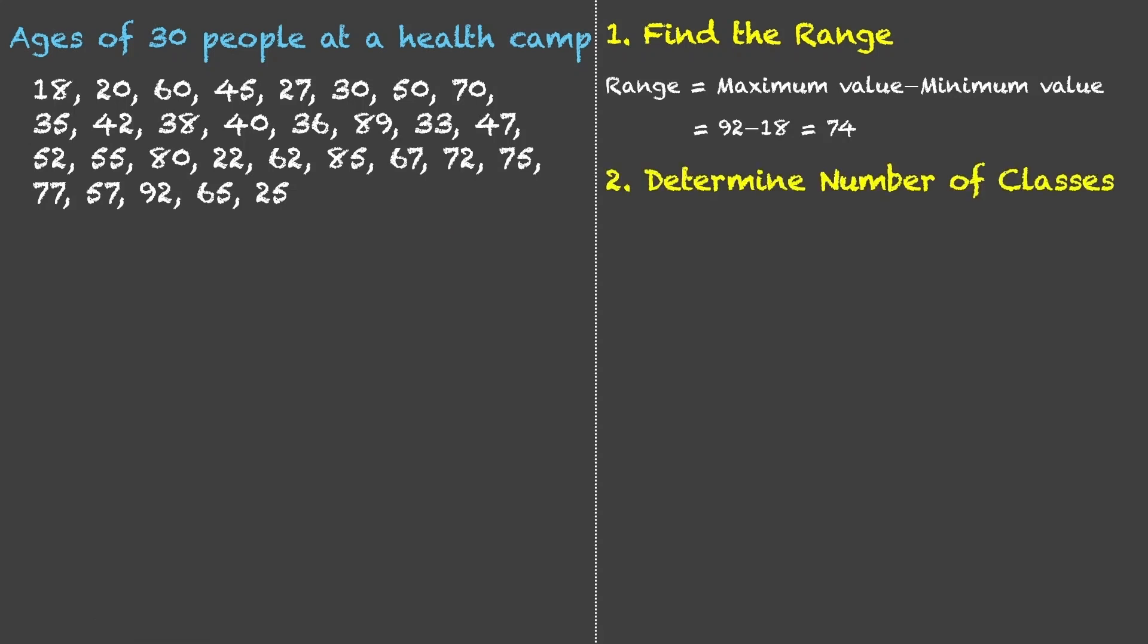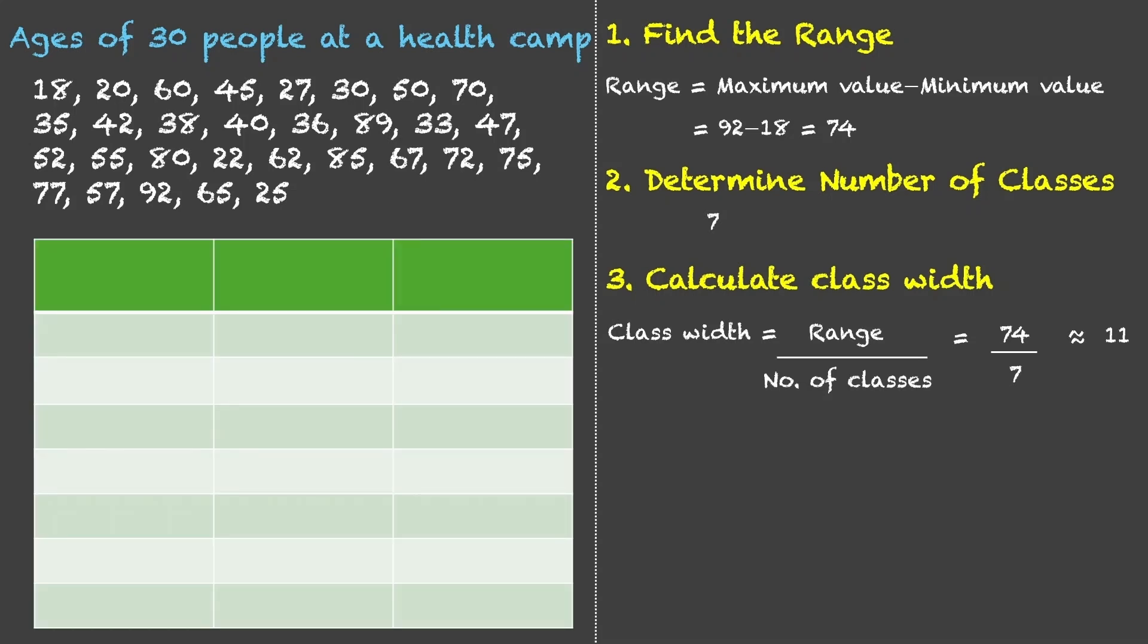Then, we will determine the number of classes and that is completely up to us. We can choose to have 6, 7, 8, whatever classes we want. Let us take 7 over here. Then, we will calculate the class width. It is given by range divided by number of classes. 74 divided by 7, that will be 10 point something, so approximately 11.